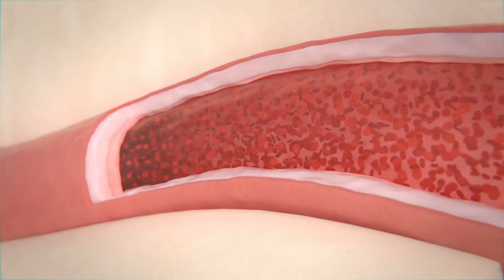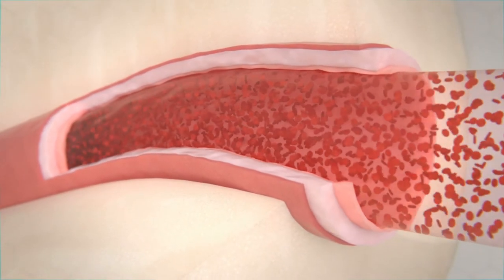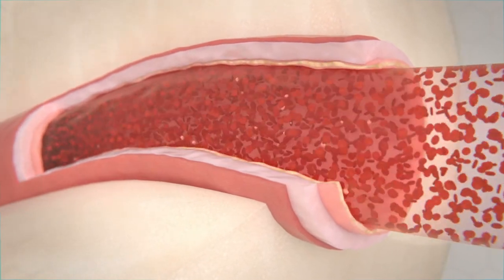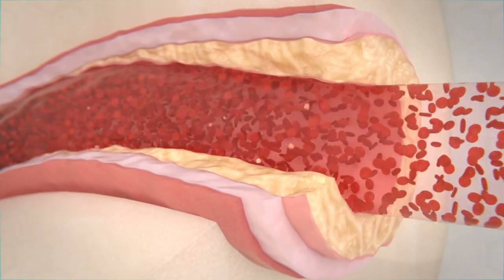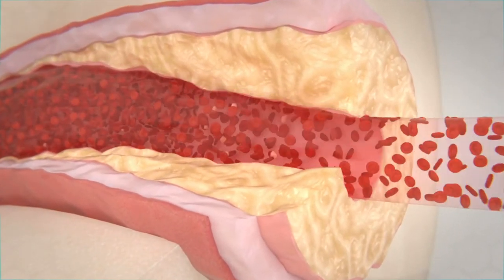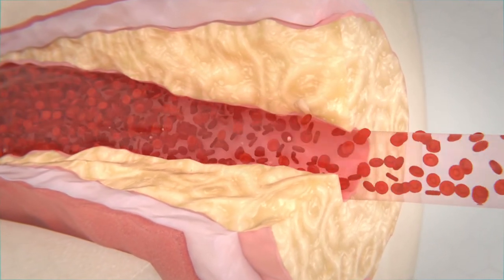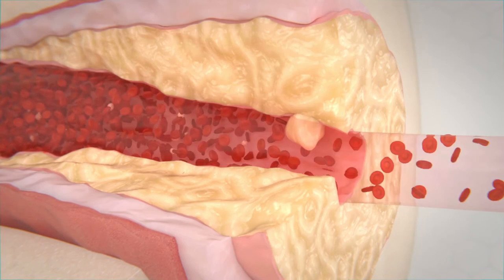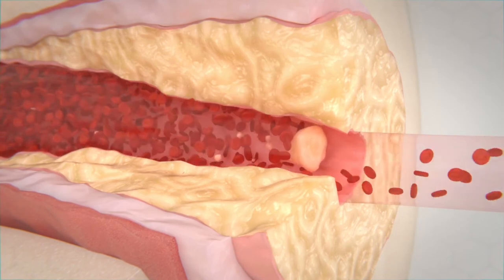Uncontrolled diabetes, high cholesterol, smoking, and high blood pressure damages the inner lining of the arteries. The body responds to this damage by inducing plaque buildup, which creates blockages and decreases blood flow to vital organs.